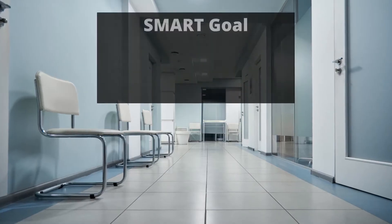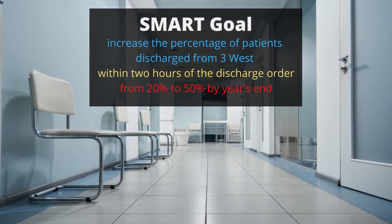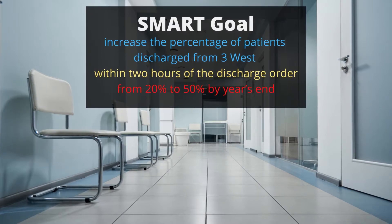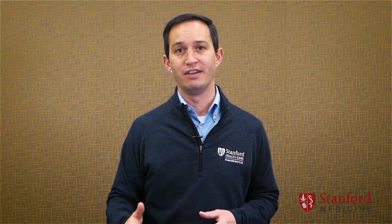Let's use an example. Suppose an inpatient team is working on a discharge delay problem on Hospital Unit 3 West. Their SMART goal is to increase the percentage of patients discharged from 3 West within two hours of the discharge order from a baseline of 20% to a target of 50% by year's end. After making workflow changes for the team rounding process, they successfully achieved their SMART goal. What they realized later, though, was that while their performance was improving, the performance on their neighboring Unit 3 East plummeted. This was because the new process diverted resources away from 3 East. 3 West didn't really solve their problem — they moved it somewhere else. So it is possible to succeed in reaching your goal but to fail at solving a problem.